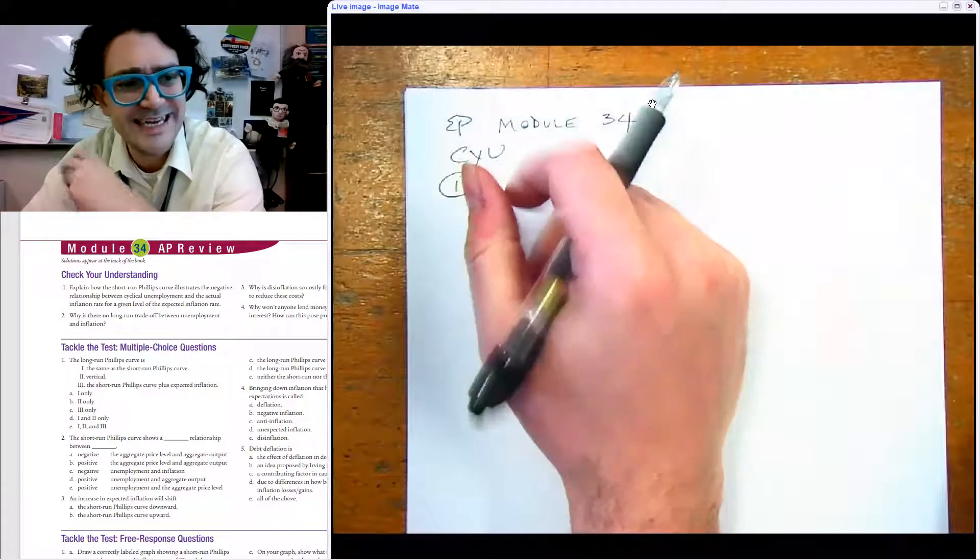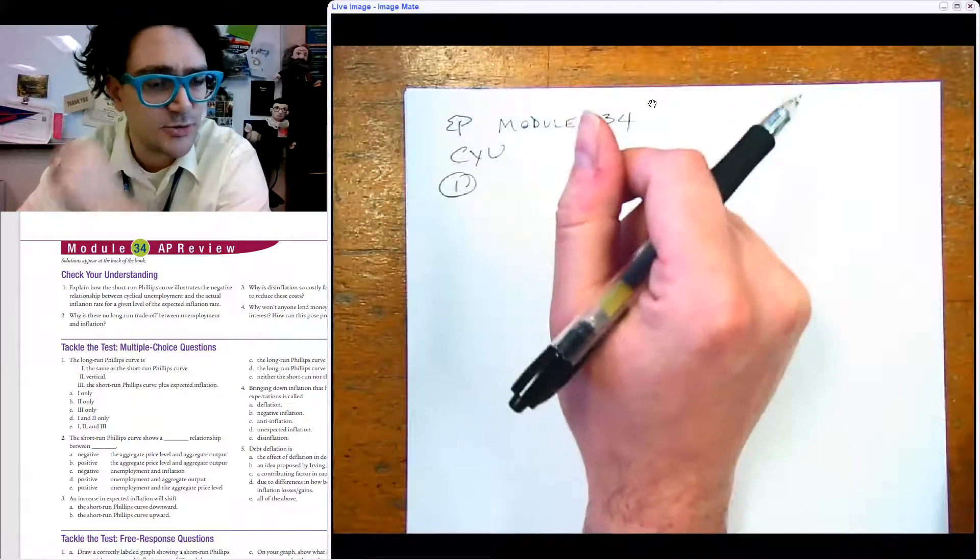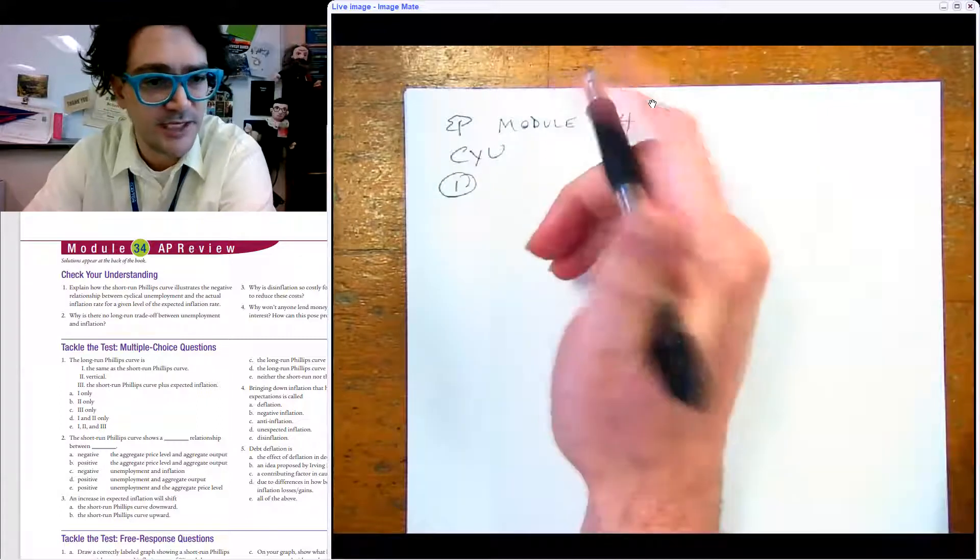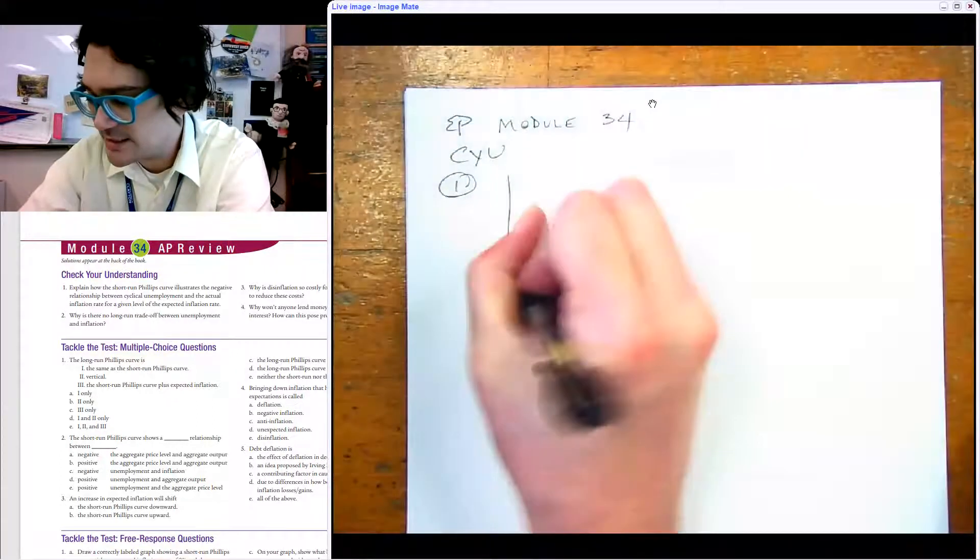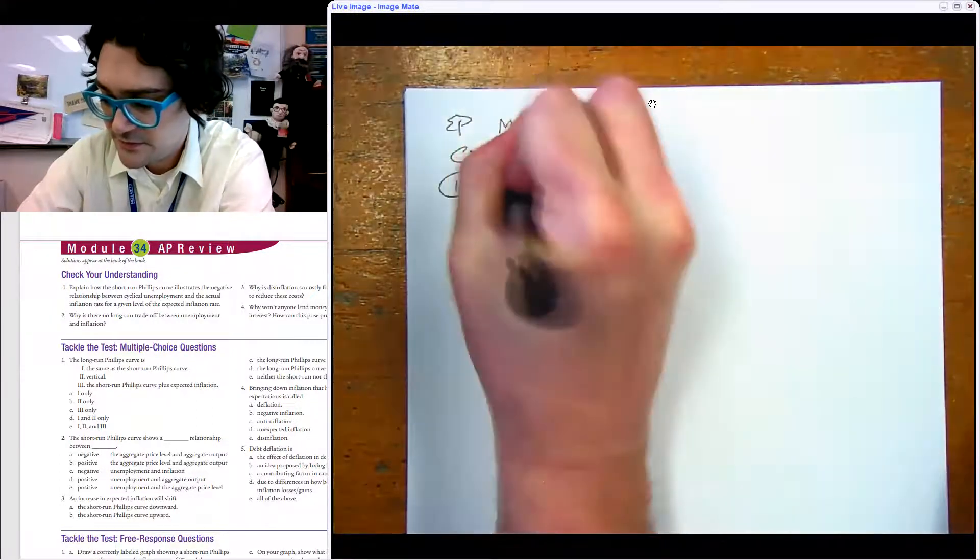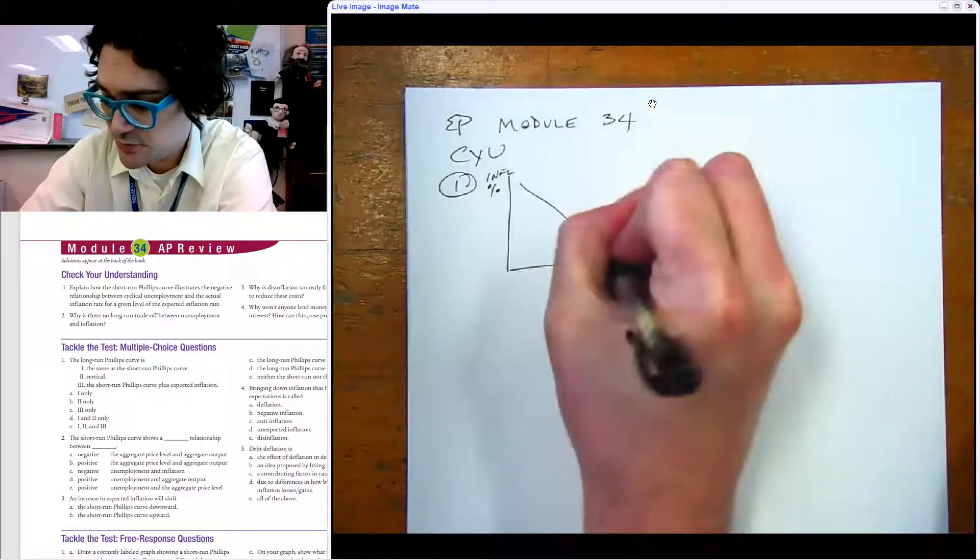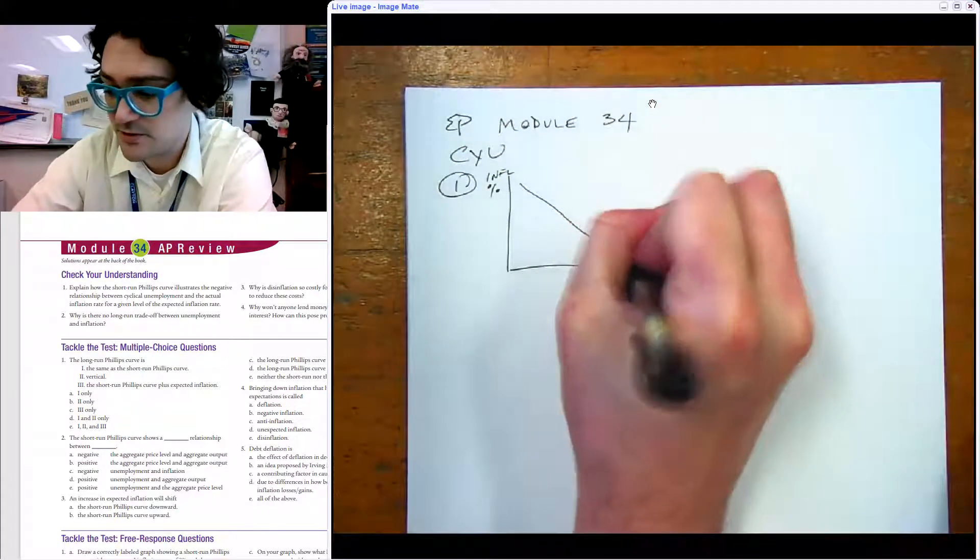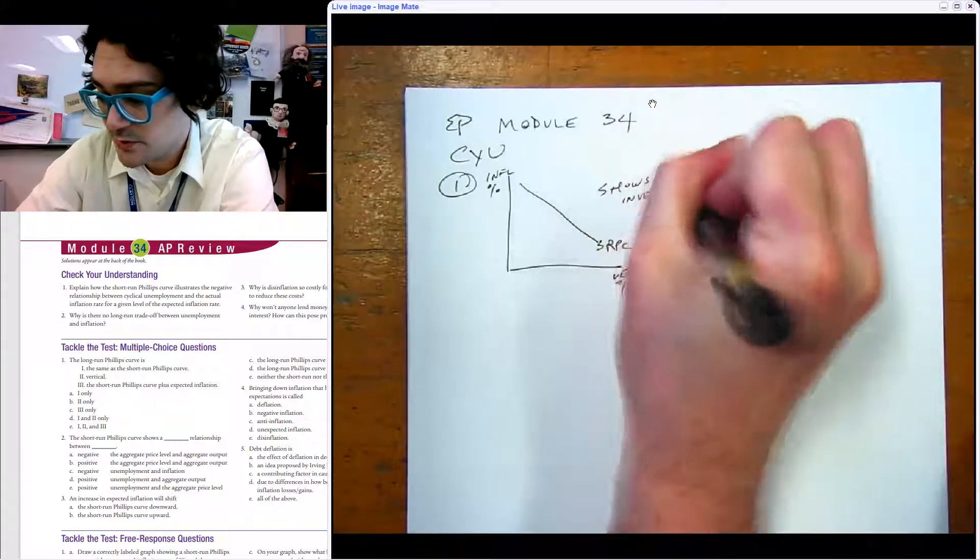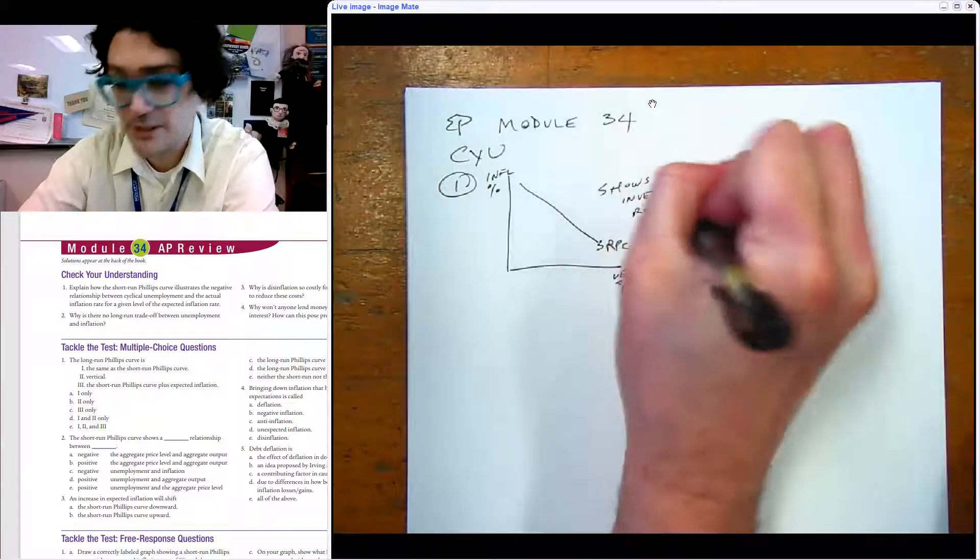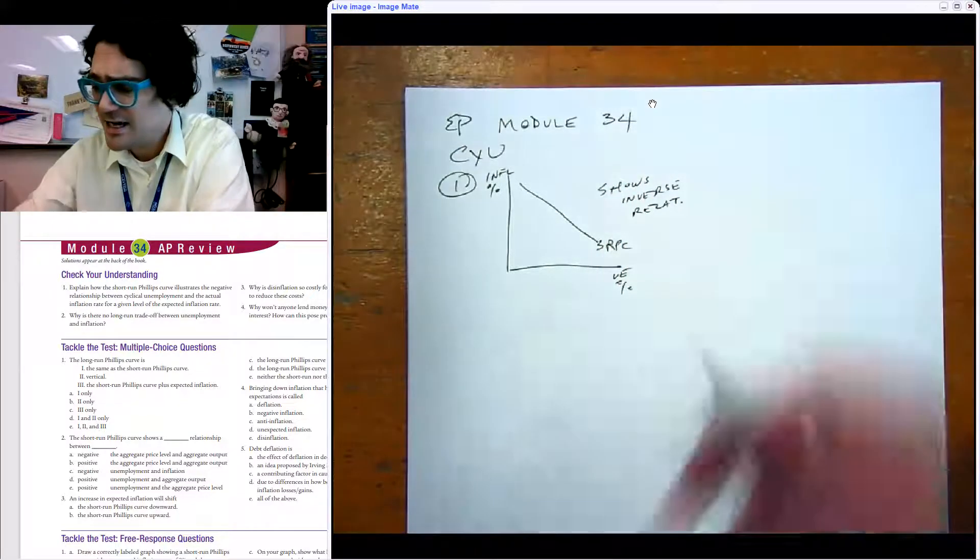What that really just means is that you have inflation percent and unemployment percent, and the short run Phillips curve shows an inverse relationship. That's literally what it shows, is that there's an inverse relationship between cyclical level of unemployment.